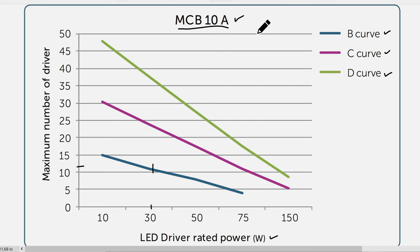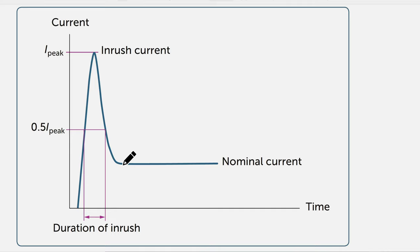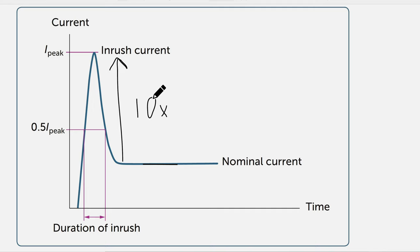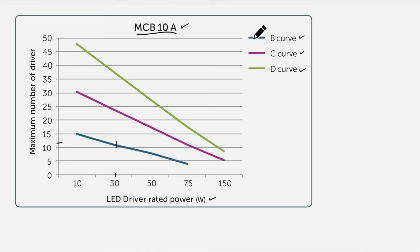The reason it would trip is because of the inrush current. If the inrush current is so much higher than the nominal current, every time I add a floodlight I have to account for that increase. If I have 10 floodlights, I will have 10 times the amount of inrush current. So one can see that it's the inrush current that is limiting how many floodlights we can use.